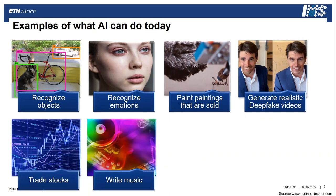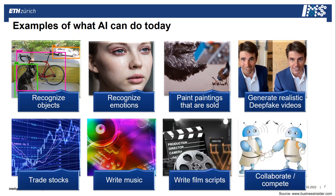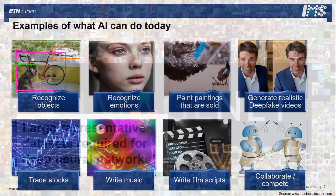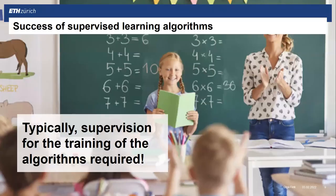AI is trading stocks, writing music, writing film scripts, and algorithms can collaborate and compete. What these algorithms typically require is large, representative datasets in order to train and enable them to perform their tasks. In many cases they also require labels — they need to know what there is to learn in a specific input or image.